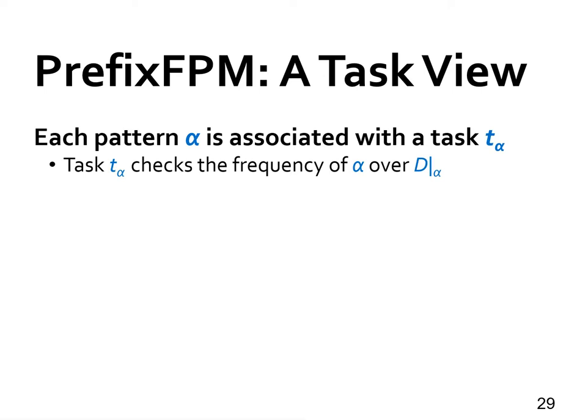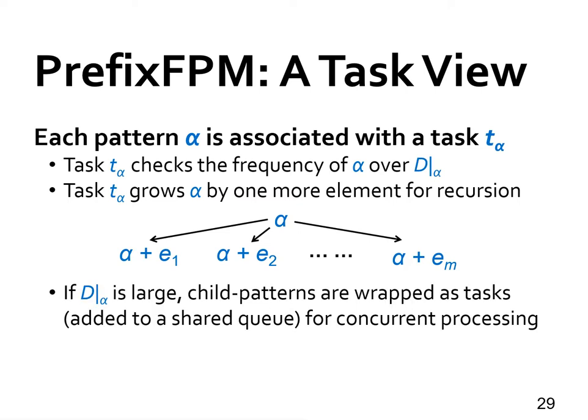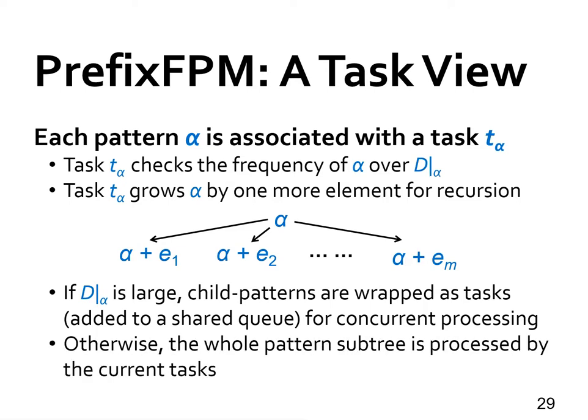Our PrefixFPM framework adopts a task-centric computation model, where each pattern is associated with a task. The task will check if this pattern is frequent, and if so, it will grow the pattern by one more element to generate child patterns for further checking. If the projected database is big, child patterns are wrapped into independent tasks, which are then added to a task queue to be fetched by other threads for mining. Otherwise, the task is efficient to process by the current thread itself, so the thread will directly process it in depth-first pattern growth order.